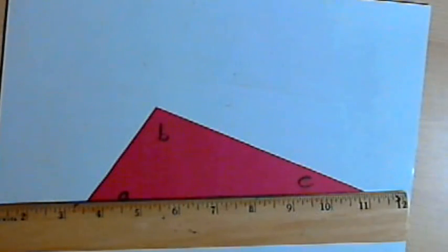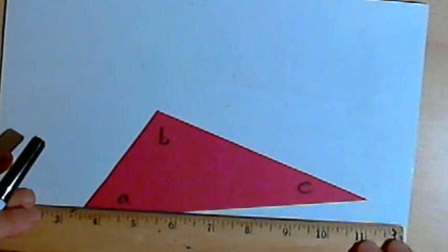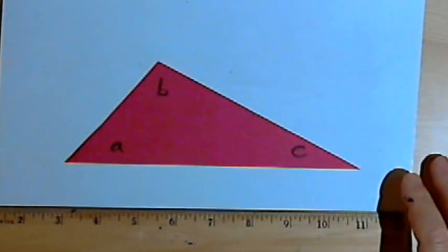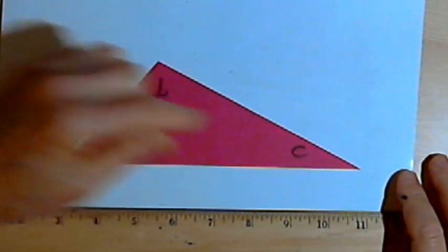I'm going to start out with a demonstration, not yet a proof. I've got a piece of paper that I cut into a triangle and I've labeled the three angles A, B and C.